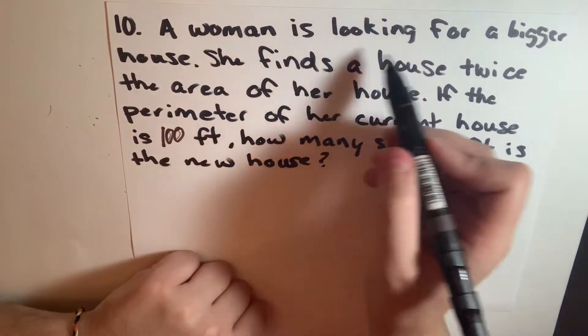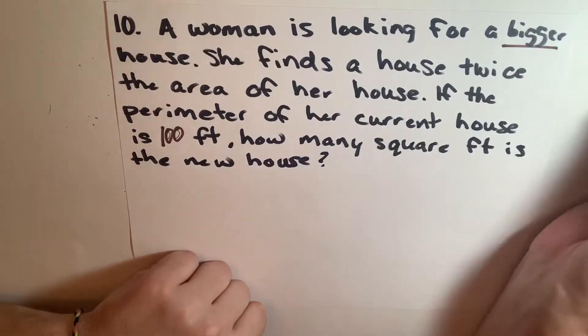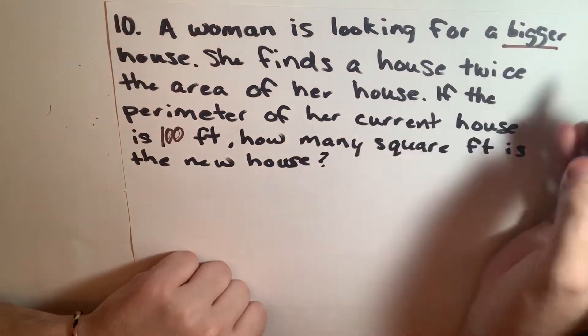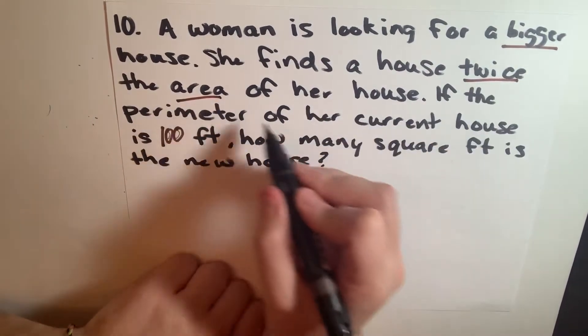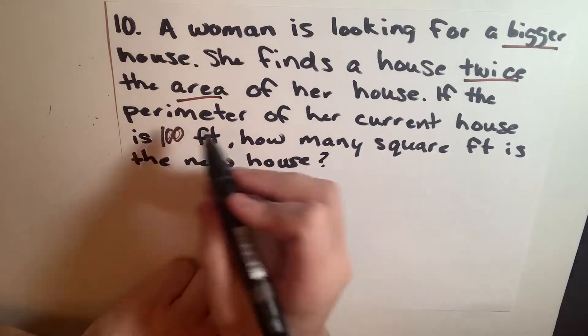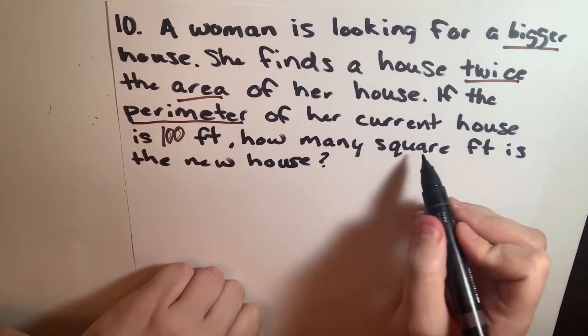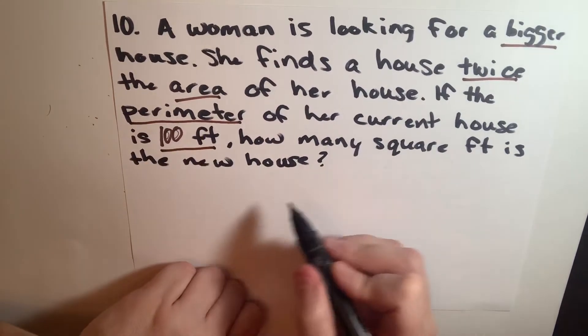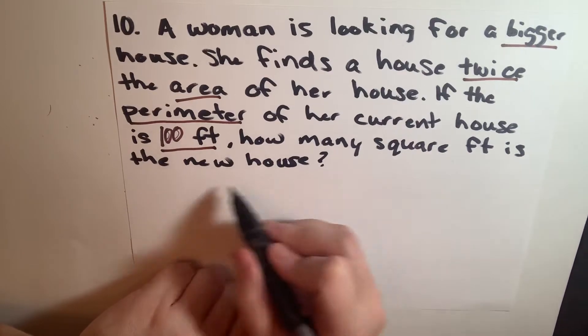For number 10, it says a woman is looking for a bigger house. She finds a house twice the area of her current house. If the perimeter of her current house is 100 feet, how many square feet is the new home?